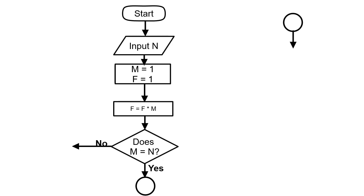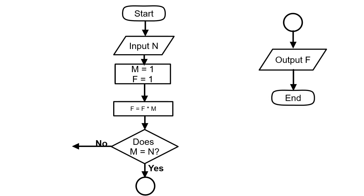We have an on-page connector here, indicating that this line of action cannot be written further on this side, so we proceed from the other side. If yes, we output f — f becomes our answer — and then we end the program. But if no, if m is not equal to n, then we do m = m + 1 and come back to the process again.